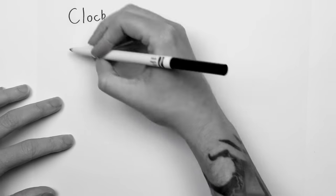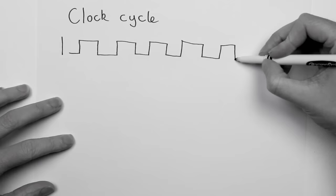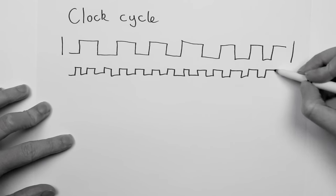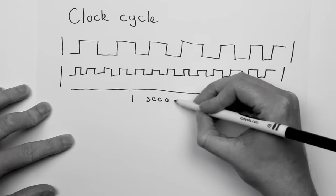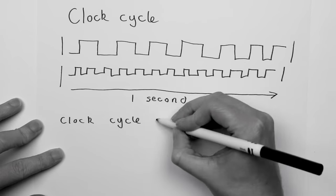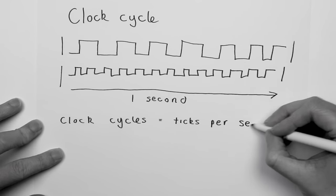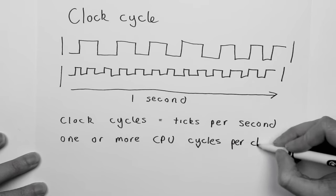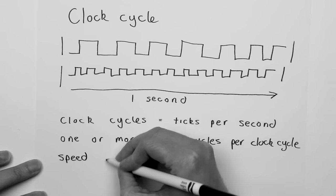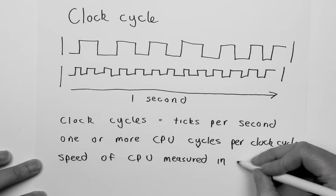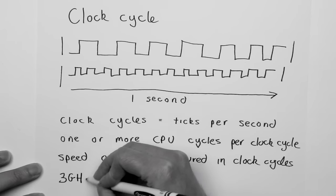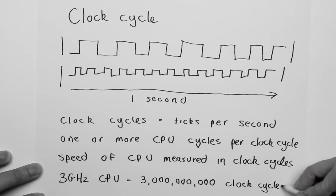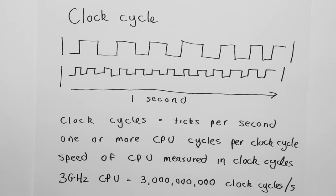We don't measure the speed of a CPU in CPU cycles — we measure it in clock cycles. Each processor has a different speed, measured in clock cycles per second. Each clock cycle triggers one or more CPU cycles. A 3 gigahertz CPU has 3 billion clock cycles per second, but we can't say for sure that it has 3 billion CPU cycles per second. This makes it hard to measure real performance of a CPU based only on clock speed. We really care about CPU cycles, not clock cycles, so it's important to understand the difference between the two.